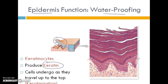Keratinocytes produce a protein called keratin, which is a waterproofing substance. As new cells divide below and push them upward, the keratinocytes fill with keratin and essentially die. By the time they reach the very top of the epidermis, they're just a cell membrane filled with keratin, providing waterproofing and protection from abrasion. This whole process is called keratinization, and those dead cells are eventually sloughed off.